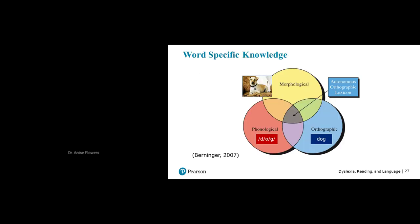Dr. Virginia Berenger has a similar model regarding word-specific knowledge. Word naming begins when an individual sees a word — say, the word 'dog.' If you instantly say the word, you've connected the orthographic representation with the phonological pronunciation. If you can also immediately connect that to the concept of what a dog is, that word is part of your sight word vocabulary — what Dr. Berenger called your autonomous orthographic lexicon. Analyzing letters, sounds, and meaning allows us to form lexical orthographic representations in memory.